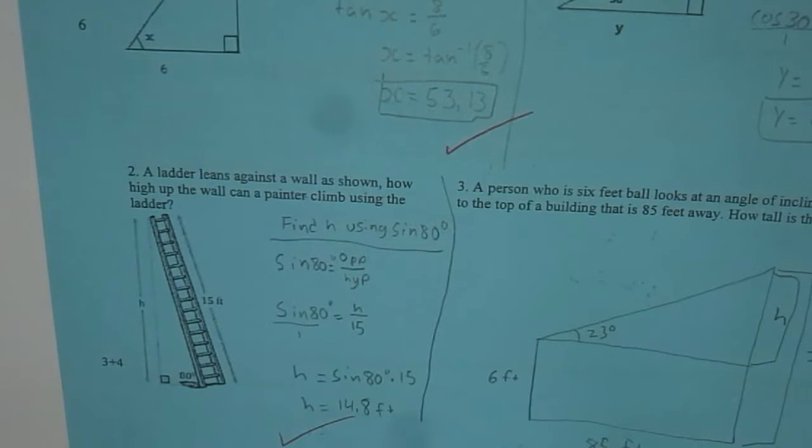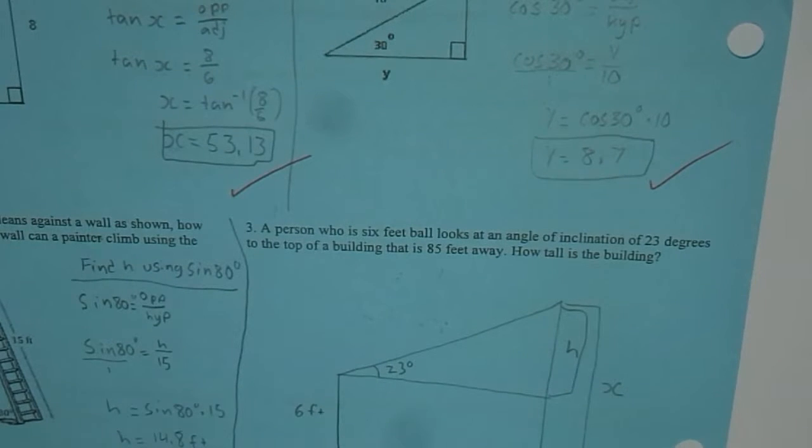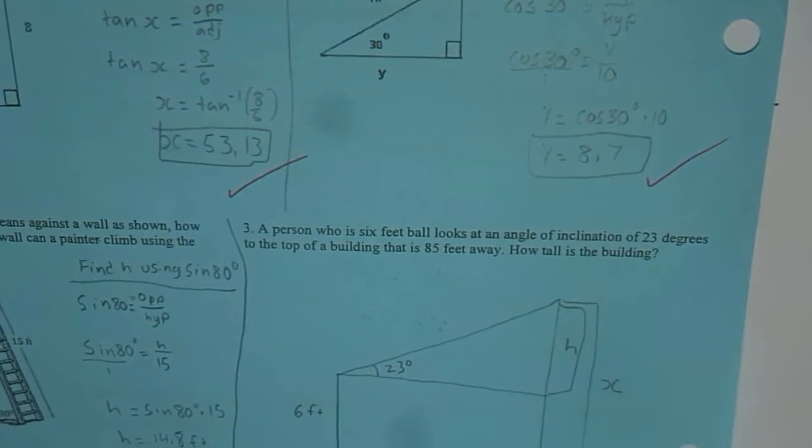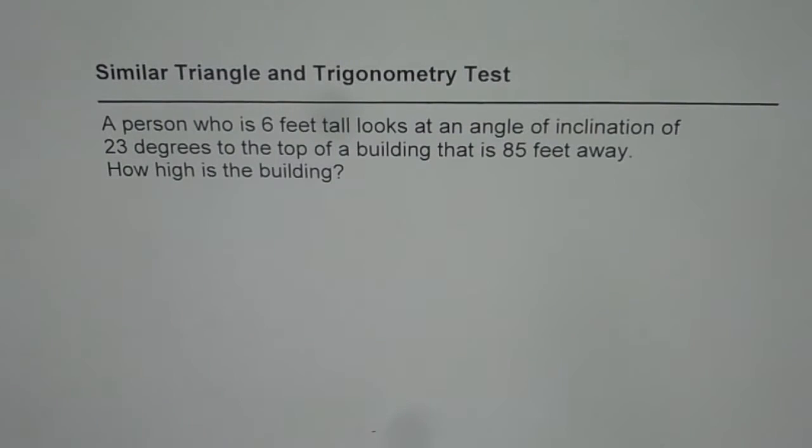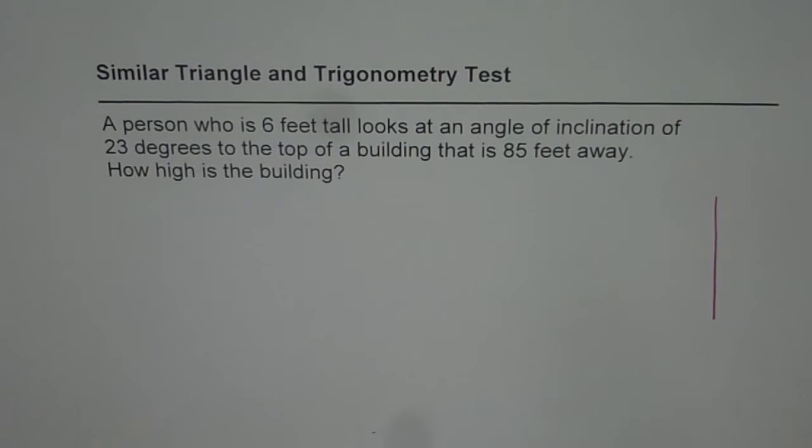Then we have a question which is question number 3 on applications and I'll discuss this question now with you. So this question is a person who is 6 feet tall looks at an angle of inclination of 23 degrees to the top of a building that is 85 feet away. How high is the building? So let's first sketch. So most important is to sketch a diagram.